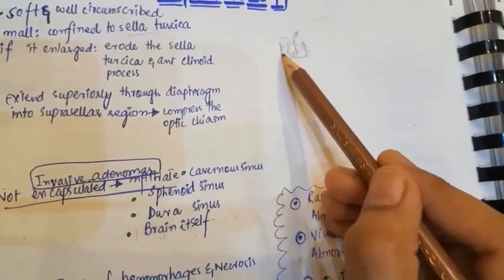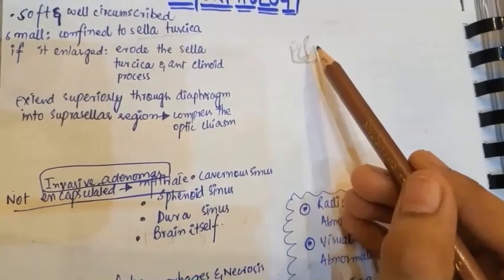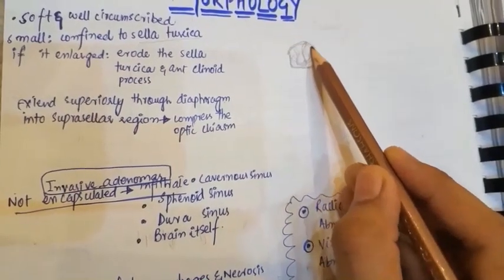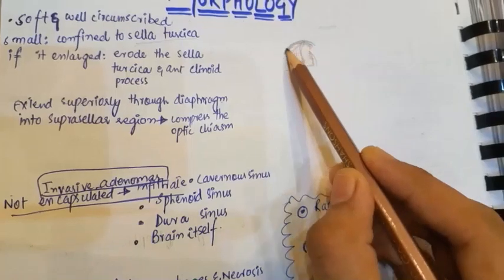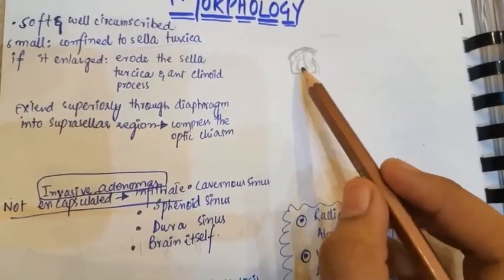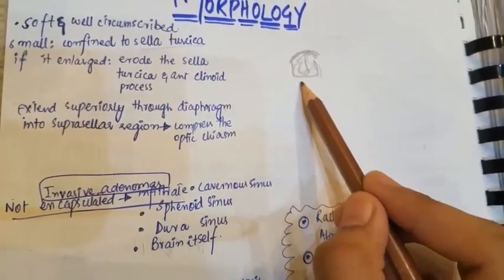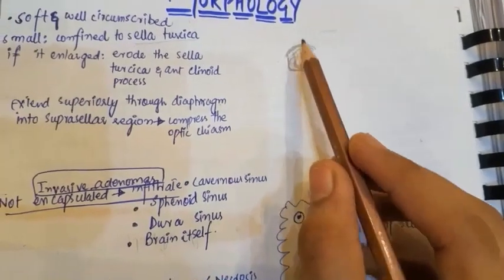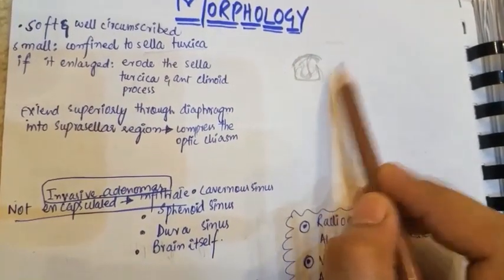When the adenoma enlarges, it can erode the sella turcica as well as the anterior clinoid process, which is the process present in front of the pituitary gland. On the upper side there is a diaphragma sellae. When adenomas erode the sella turcica, they can also erode the anterior clinoid process and the diaphragm, extending into the suprasellar region.